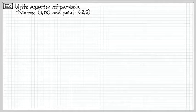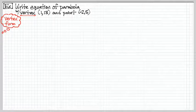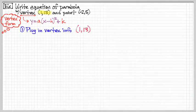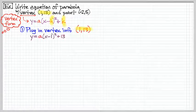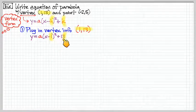Here's the first example: write an equation of a parabola with vertex (1, 13) and point (-2, 5). We see the keyword 'vertex,' and that should make us think vertex form would make a lot of sense to use. So we take the vertex information and plug that into our H and K. Then we're left with figuring out the A value after that. Vertex form is so convenient — it's so easy to plug in.